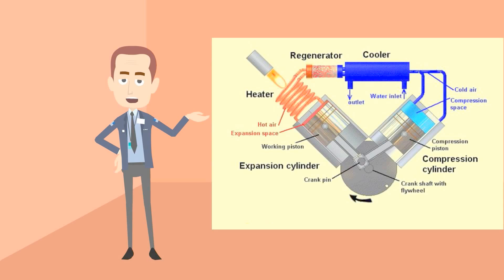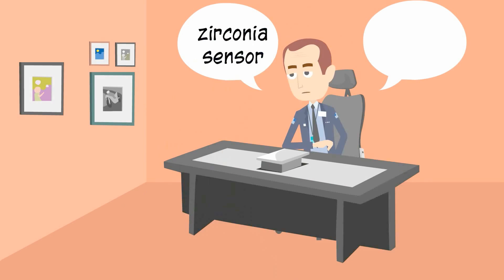Oxygen Sensor. It measures the proportion of oxygen in fuel and the amount of fuel consumed by the engine. There are two types of oxygen sensors. One is zirconia and another one is titania.